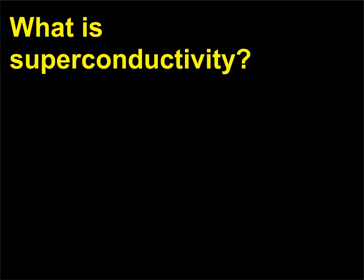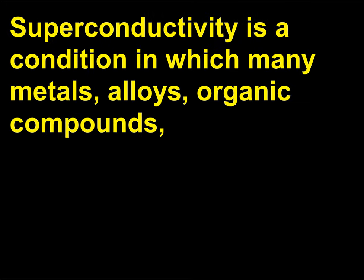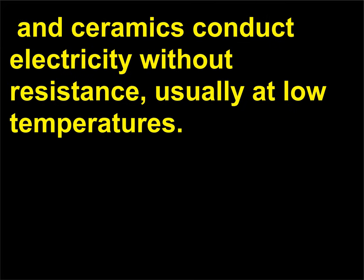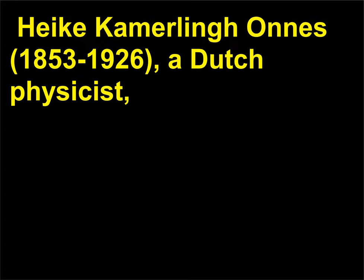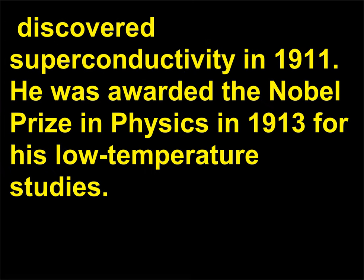What is superconductivity? Superconductivity is a condition in which many metals, alloys, organic compounds, and ceramics conduct electricity without resistance, usually at low temperatures. Heike Kamerlingh Onnes (1853–1926), a Dutch physicist, discovered superconductivity in 1911. He was awarded the Nobel Prize in Physics in 1913 for his low-temperature studies.